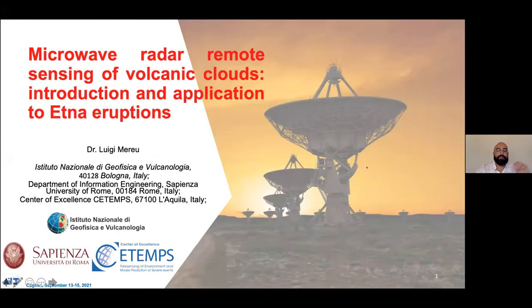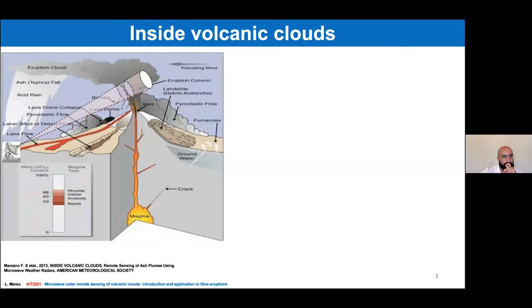We will discuss the features of radar and how we can use this active sensor to monitor the volcanic ash cloud. In a typical scenario, the radar will survey the eruptive activity, and thanks to its agility in elevation, azimuth, and range, it can probe the volcanic plume.